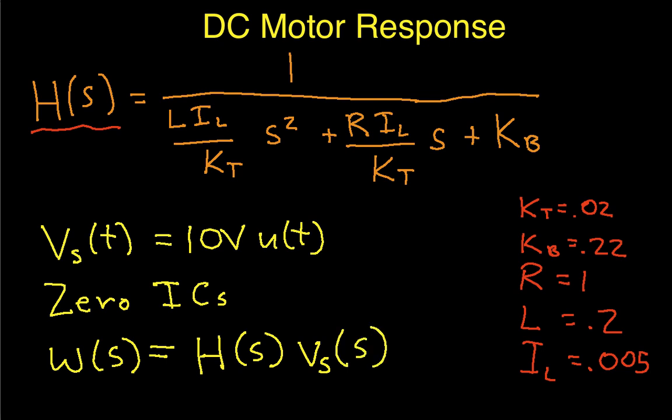So, the idea is that to find the output of the motor, we're going to get it in terms of the Laplace transform. We need the Laplace transform of the input. We already have H of S, it's up here, and we've got all the handy numerical constants that we need to actually evaluate H of S. So the only thing we really need to do is figure out what V of S is.